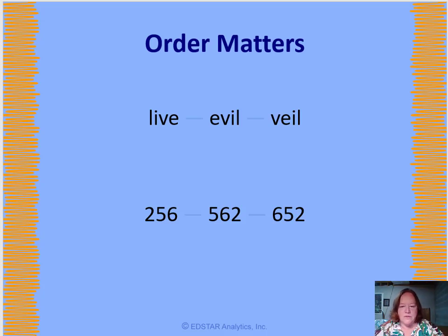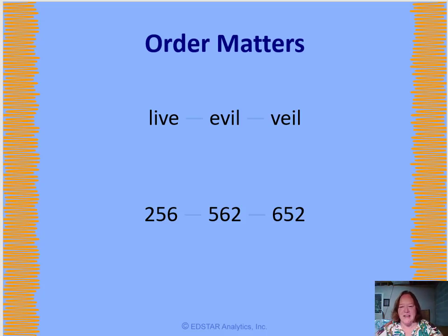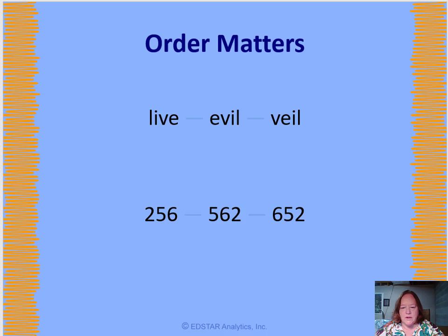The words shown here all use the same letters, but the first one spells 'live,' the next one is 'evil,' and the last one is 'veil.' The numbers on the bottom are also the same digits but in different orders, so they're different values — just like the words are different. For example: 256, 562, 652.